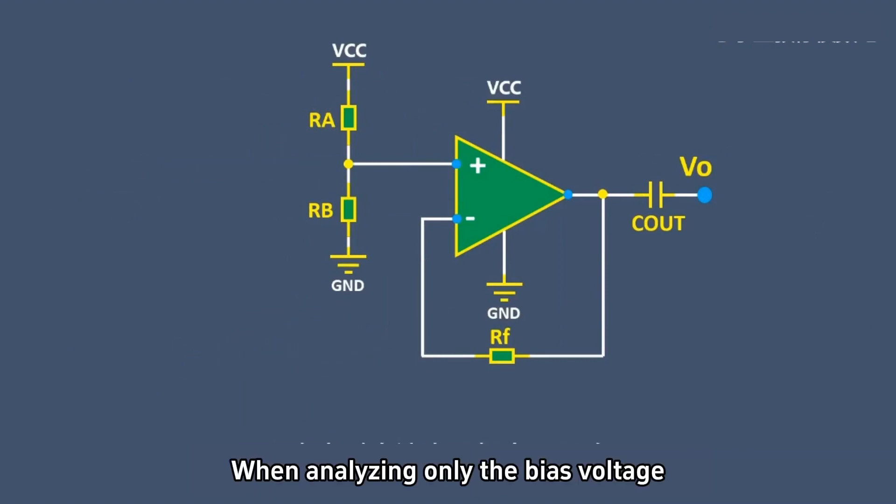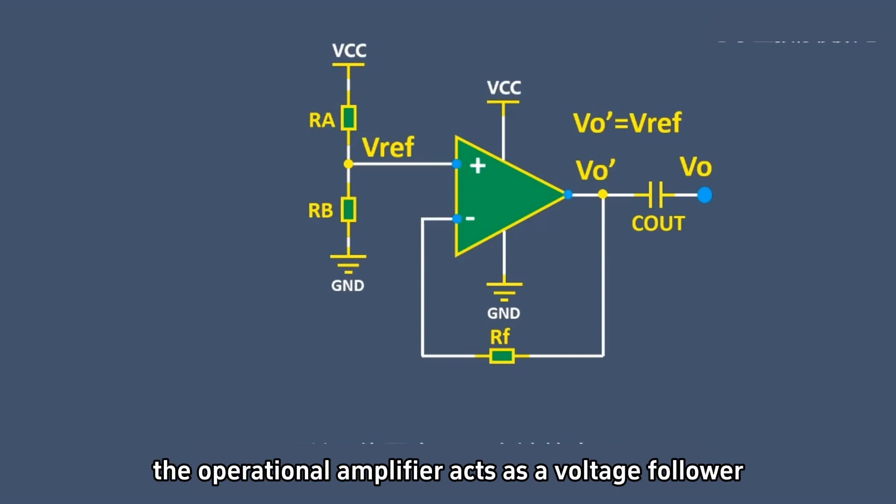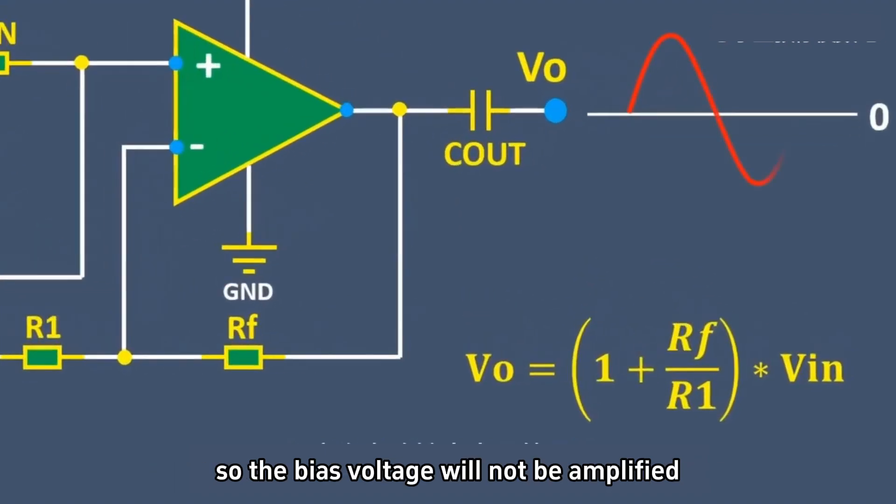When analyzing only the bias voltage, the capacitor acts as an open circuit for DC voltage. As the bias voltage acts as the input signal, the operational amplifier acts as a voltage follower, so the bias voltage will not be amplified.